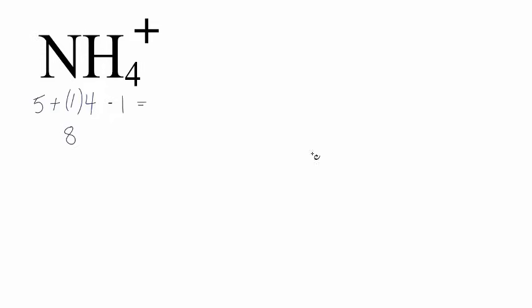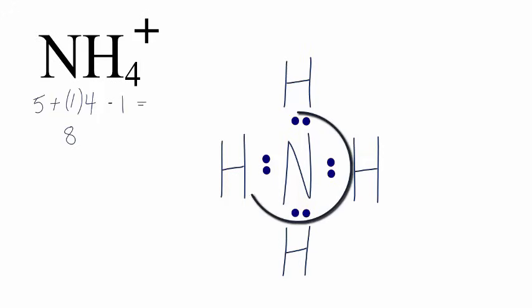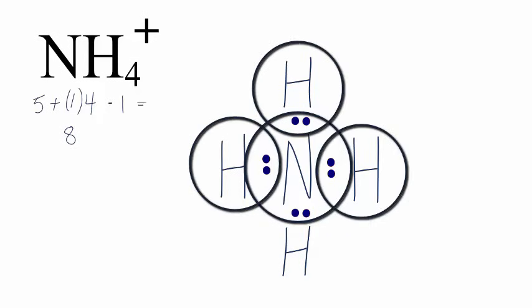We'll put the N in the center, hydrogen always on the outside, and then we'll put the four hydrogens around it. We have a total of eight valence electrons. Let's put a pair of electrons between each of the atoms to form a chemical bond. We've used all eight valence electrons. The nitrogen has a full outer shell — an octet — and the hydrogens only need two, so they all have full outer shells. That's the Lewis structure for NH4+, called the ammonium ion.